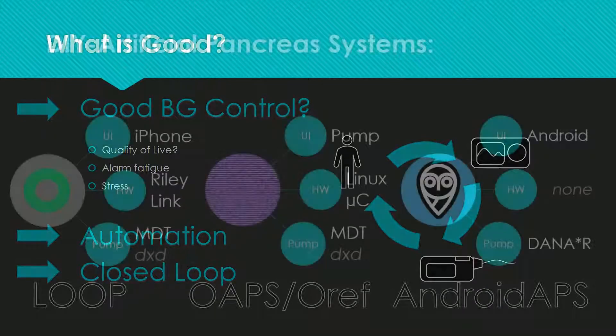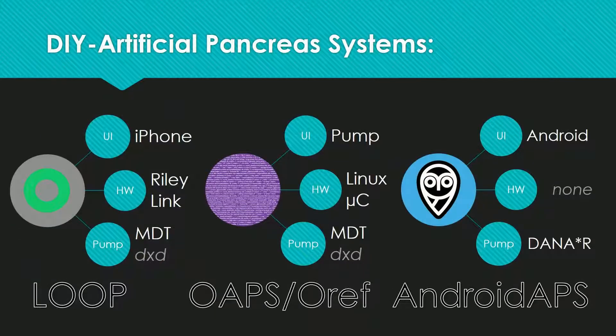So I was looking at the open source do-it-yourself systems available, and these three were on my shortlist. Loop, that was presented here by Ned Radcliffe last year, runs on an iPhone with which you also do the interactions. It connects via a small hardware device called Riley Link to an unfortunately now discontinued Medtronic pump. OpenAPS, that Dana Lewis showed you the year before, uses the same pump. The user interaction is done via the pump itself or a smartwatch, and the APS algorithms run on a small Linux microcontroller.